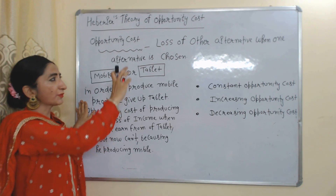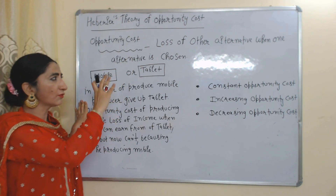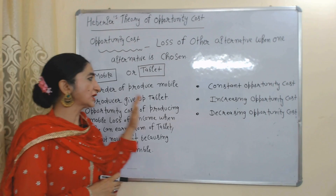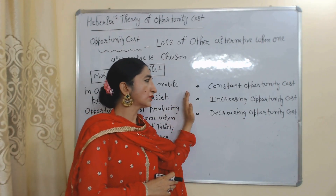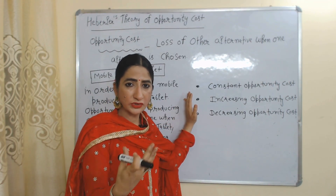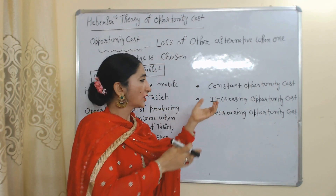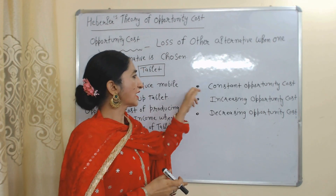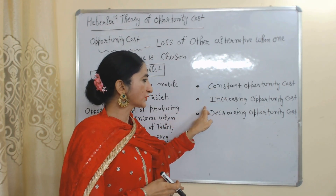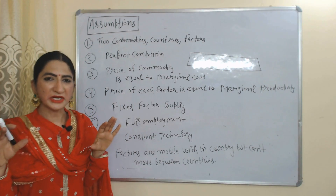So we can say the opportunity cost is loss of other alternative when one alternative is chosen. In this theory we will talk about three types of opportunity cost and we will also see how we can do trade under these: constant opportunity cost, increasing opportunity cost, and decreasing opportunity cost.